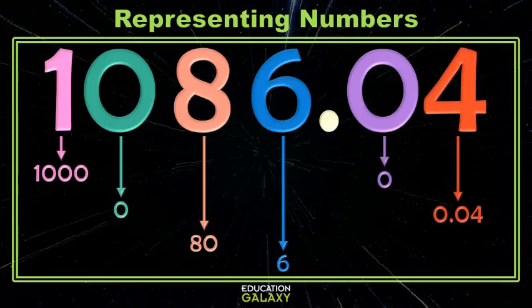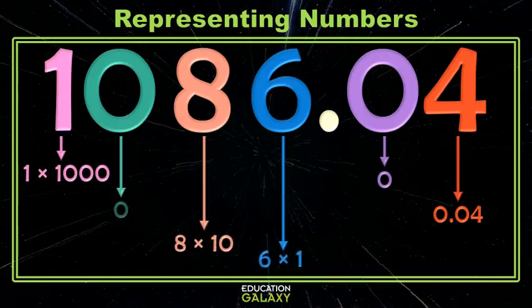Now we're gonna take each of those values and write them as a product based on their place value. So I have 1,000. That's 1 times a thousand. I have 0 hundreds. I don't need to write 0 times a hundred. We're just gonna ignore that for now. My 80 is 8 tens. So we can write that as 8 times 10. My 6 is 6 ones. We'll write that as 6 times 1. In the tenths place, we don't have anything. We don't need to write 0 times 1 tenth. So we're just gonna ignore that for now.